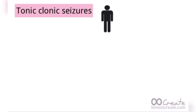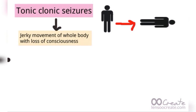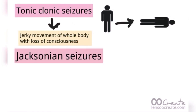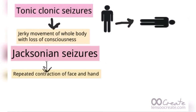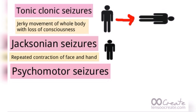There are basically three types of seizures. The first is tonic-clonic seizure, defined as jerky movement of the whole body with loss of consciousness. The second is Jacksonian seizure, defined as repeated contraction of the face and hand — remember: face and hand. The third is psychomotor seizure, in which there is hallucination in the patient.